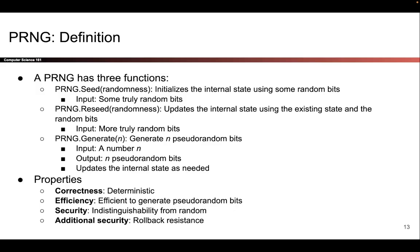What makes a PRNG correct and secure? It should be deterministic — if you run it with the same inputs you should get the same outputs. It should be efficient, meaning it does bit shifting or similar operations that computers are good at, giving efficiency benefits compared to true randomness. In terms of security, we want it to be computationally indistinguishable from random. An additional security property you might want is rollback resistance, which we will also discuss.